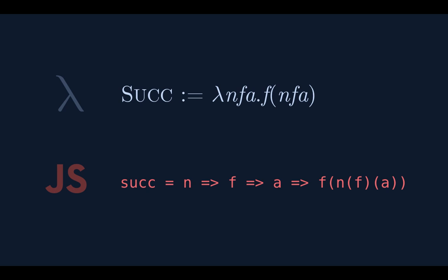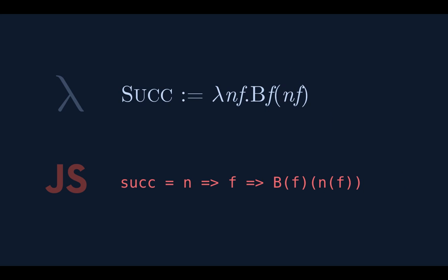Our successor takes an n and returns a function f a that applies an extra f on top of n f a. There's a nicer way: f is a function, n f is a function — this feeds an argument into the rightmost function then the result into the left function. That's the Bluebird. So the successor is the composition of one extra function on top of the original number of functions. A little prettier.